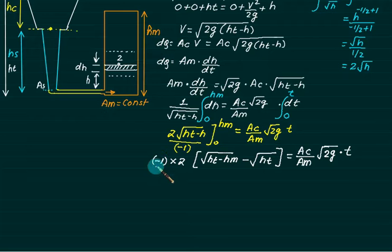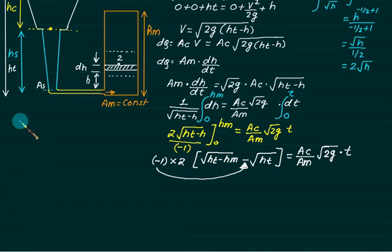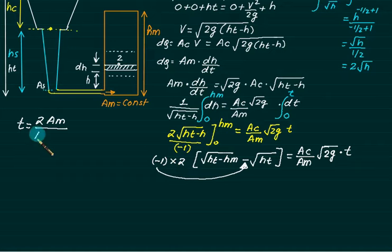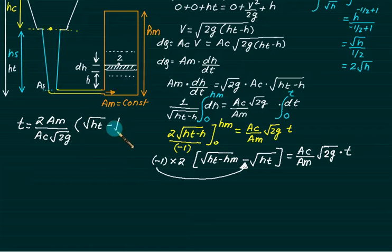The minus sign can be adjusted by swapping terms. Therefore, pouring time t equals (2 × AM) / (AC × √(2g)) × (√ht − √(ht − HM)). That is the general formula for bottom gate pouring time, which is a slightly complicated equation, so we will consider a special case.